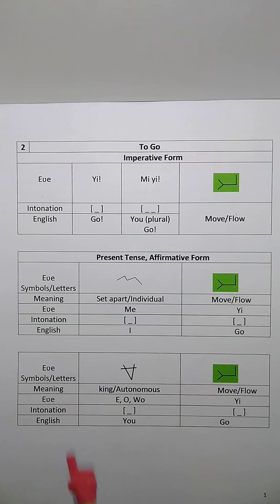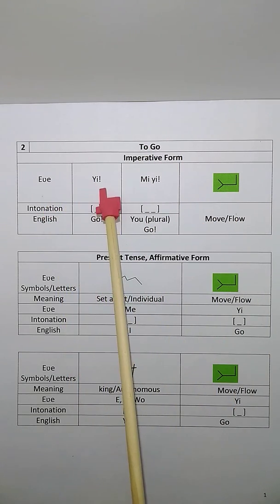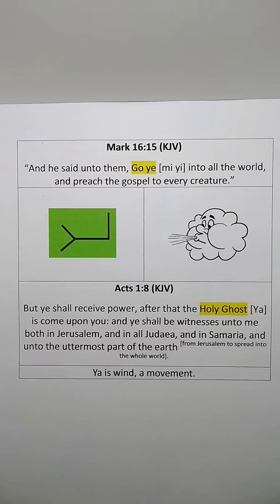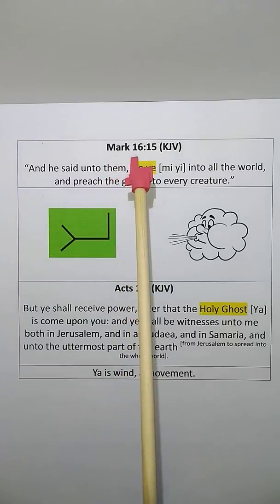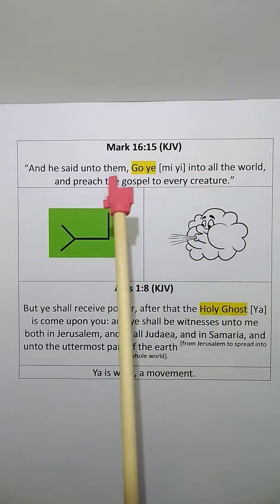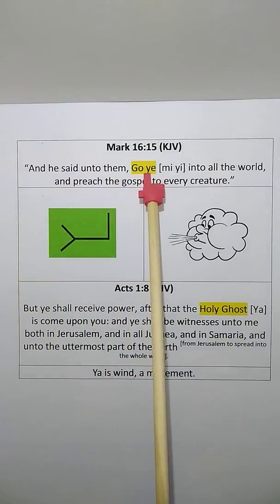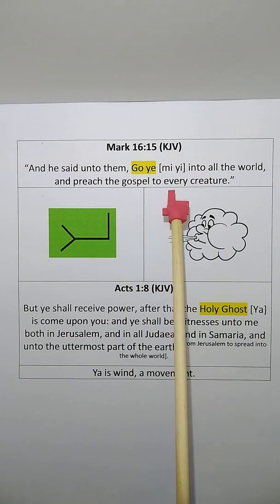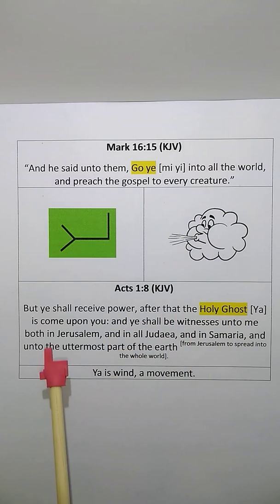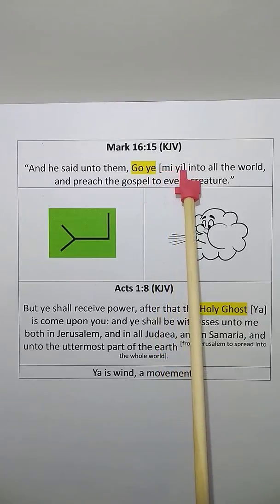To go is expressed by letter Ya in ancient Hebrew, it is Yi. This is what the Great Commission looks like, as we read it in the Gospel of Mark, chapter 16, verse 15, where Jesus said to his disciples: And he said unto them, Go ye into all the world, and preach the Gospel to every creature. So go is ye, and then me ye, go ye.